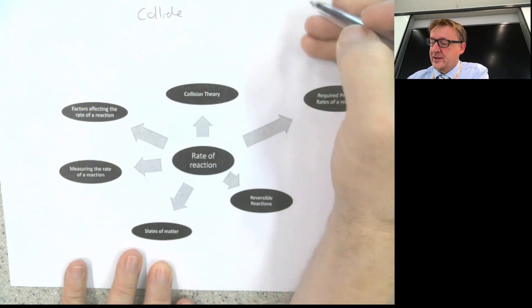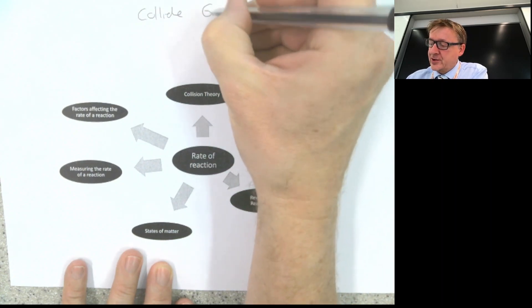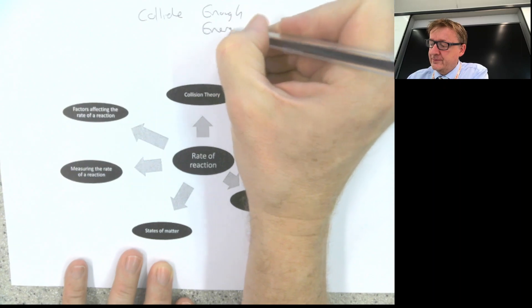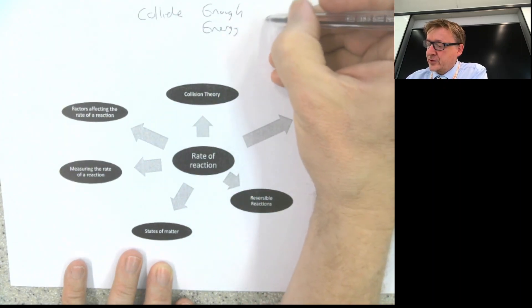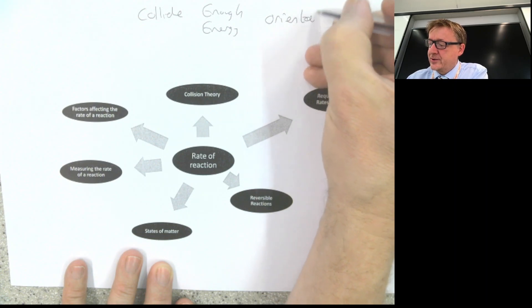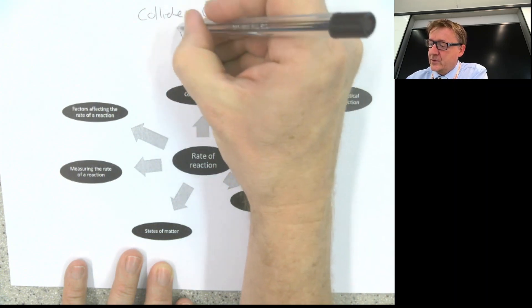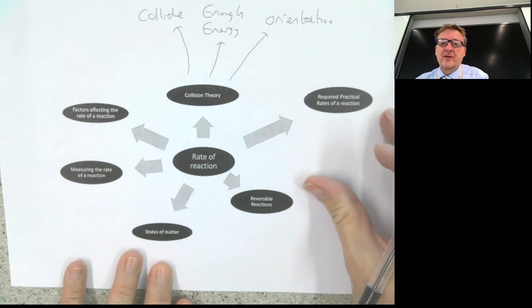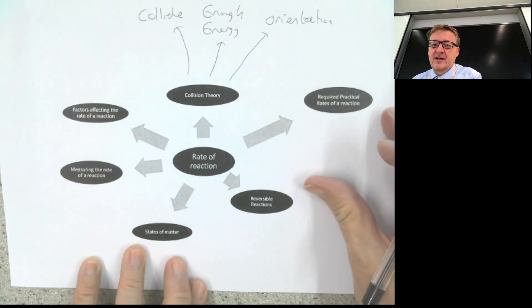Particles must collide. They must collide with enough energy. And they also must be in the correct orientation. That basically means that they're pointing in the right direction. So all three of those must happen for a reaction to happen.